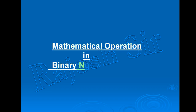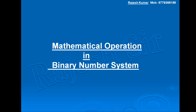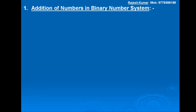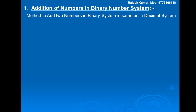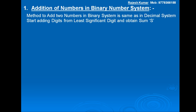Hello students. Now we will discuss mathematical operations in binary number system. The first operation is addition of numbers in binary number system. The method to add two numbers in binary system is the same as in decimal system — start adding digits from the least significant digit and obtain sum S and carry C, which is added to the next significant digit.